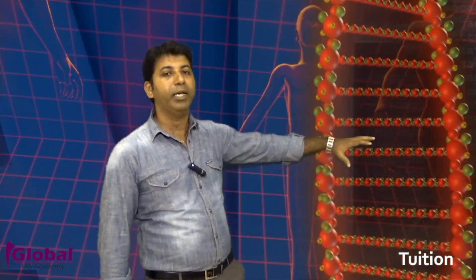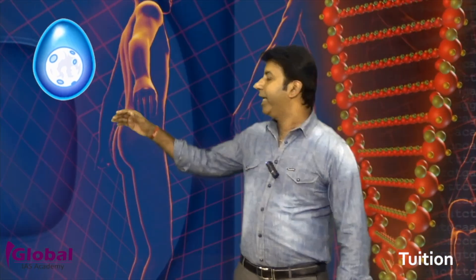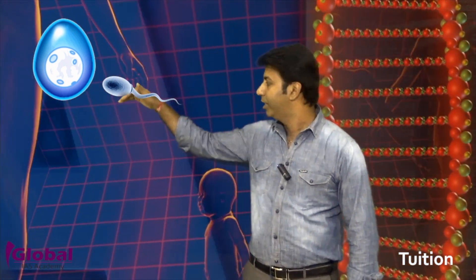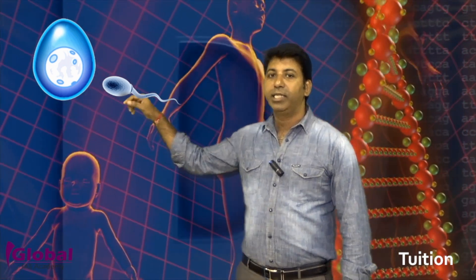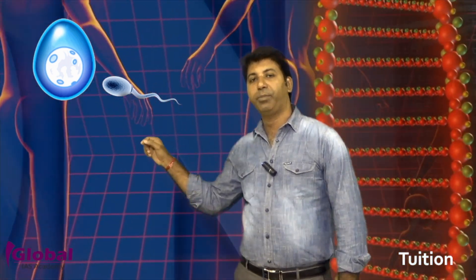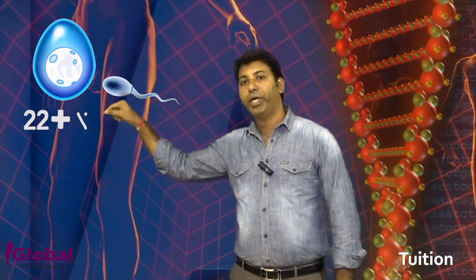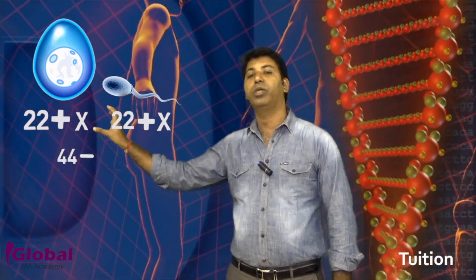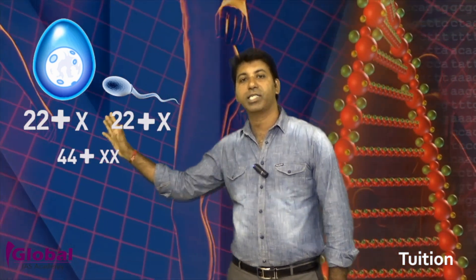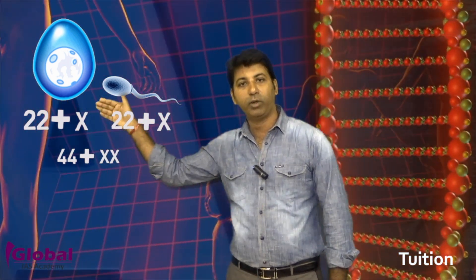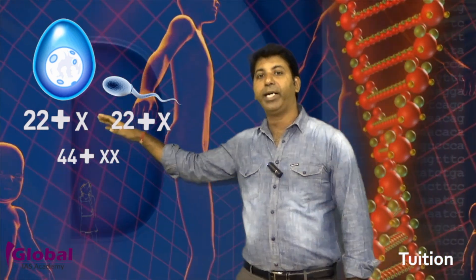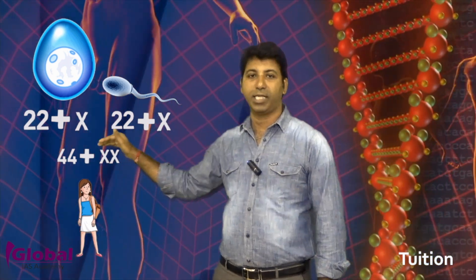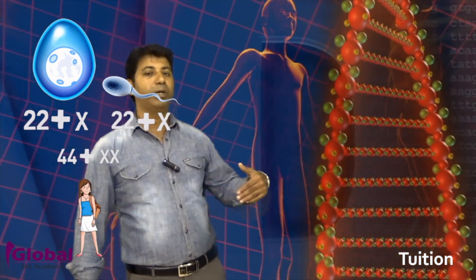During normal human reproduction, when the egg cells are present in the woman's body and sperms move inside through the normal sexual process, they reach the egg cells. If the X-type sperm (22+X) reaches the egg cell (22+X), they combine to give 44+XX — a total of 46 chromosomes — and the resulting baby will be a female.